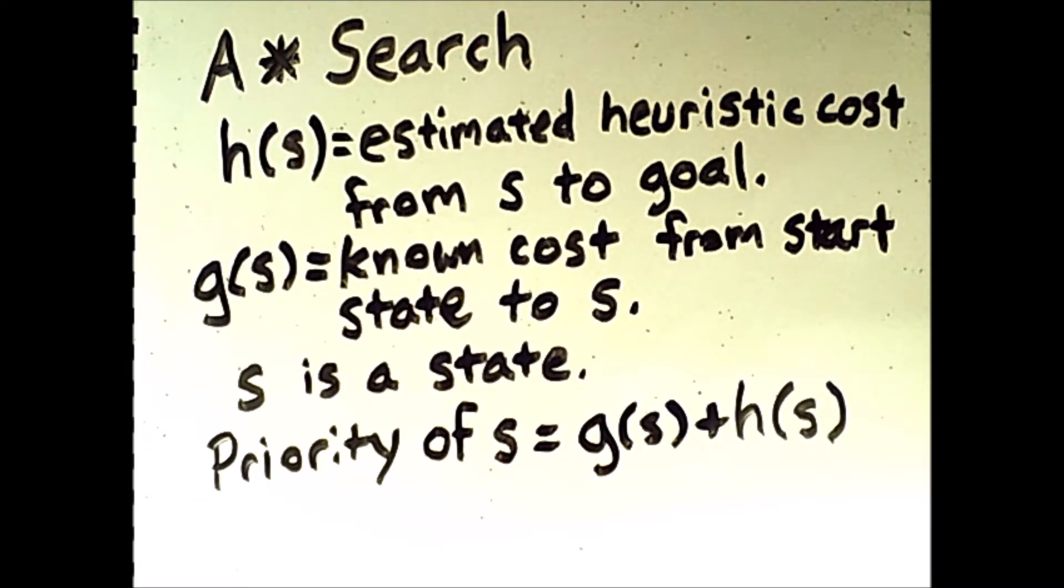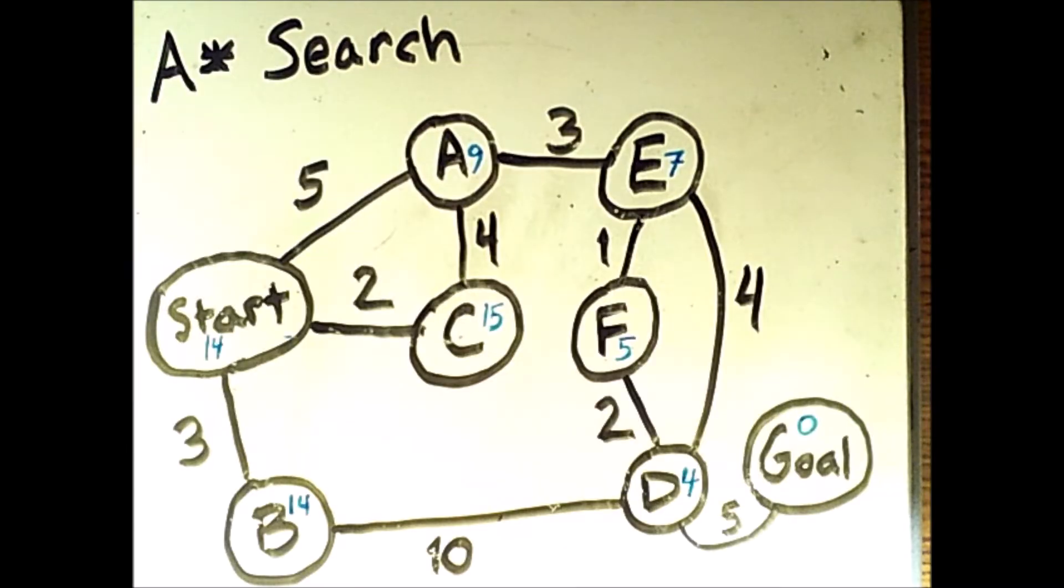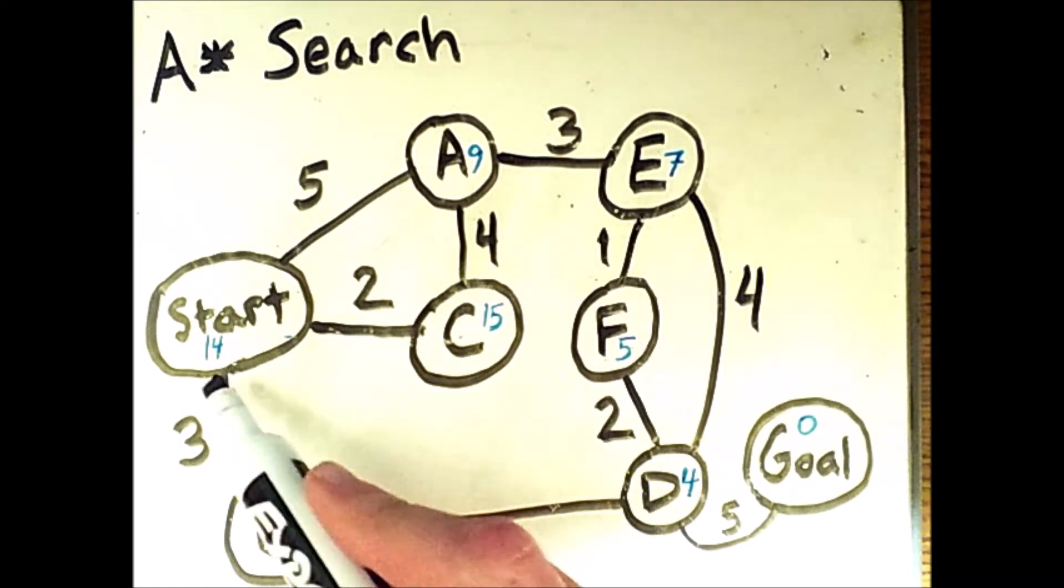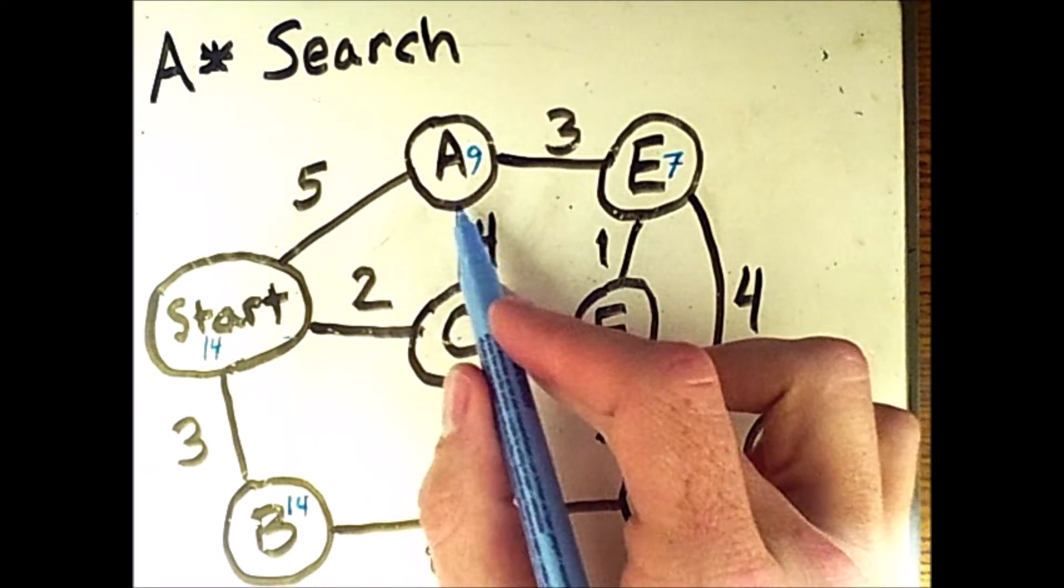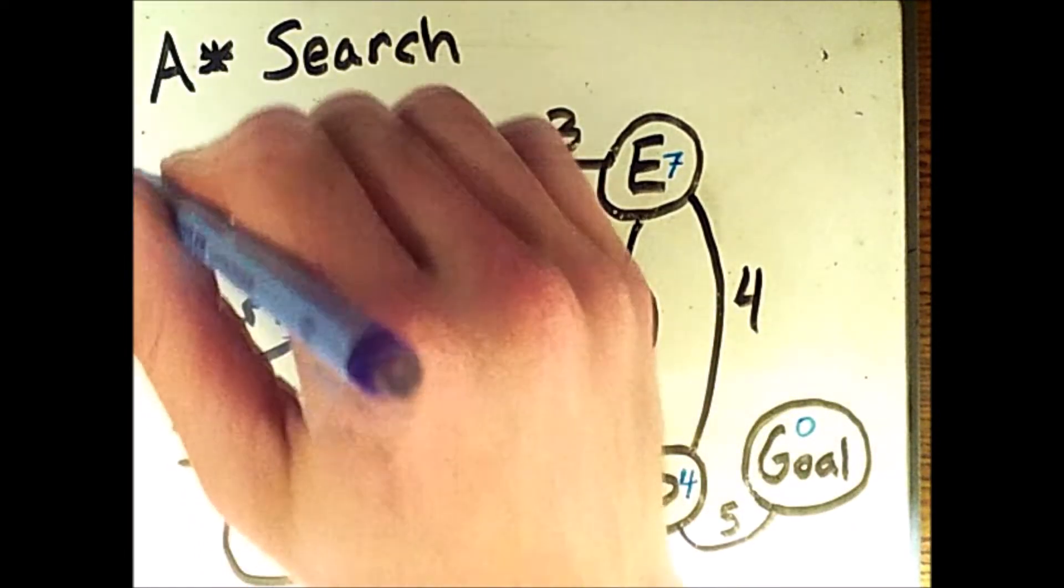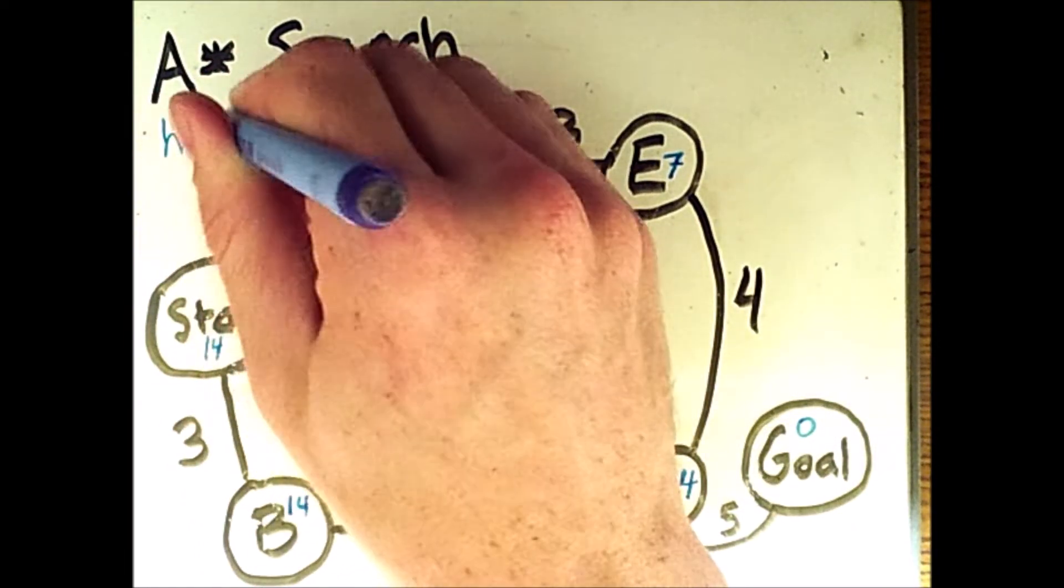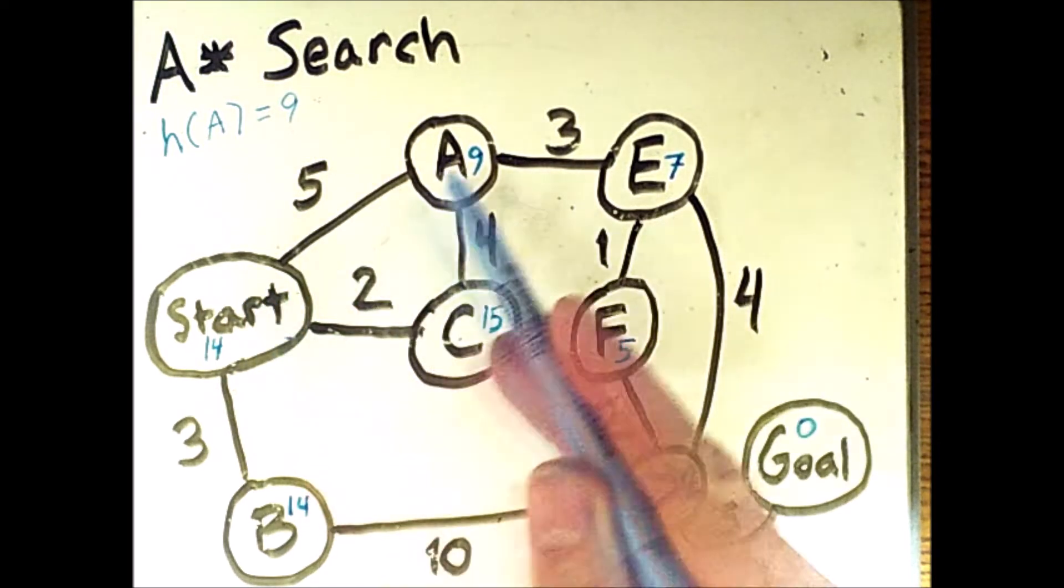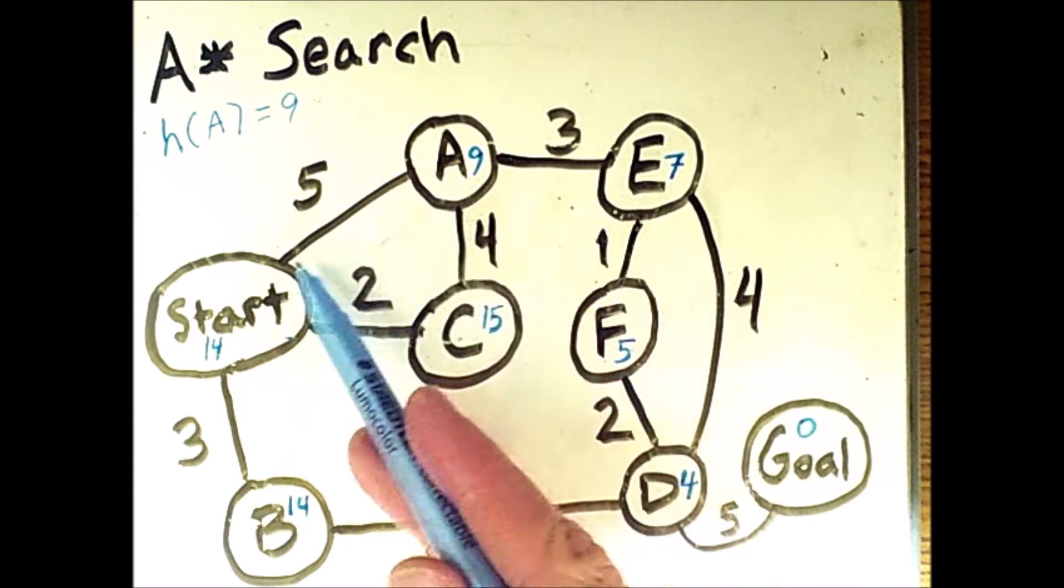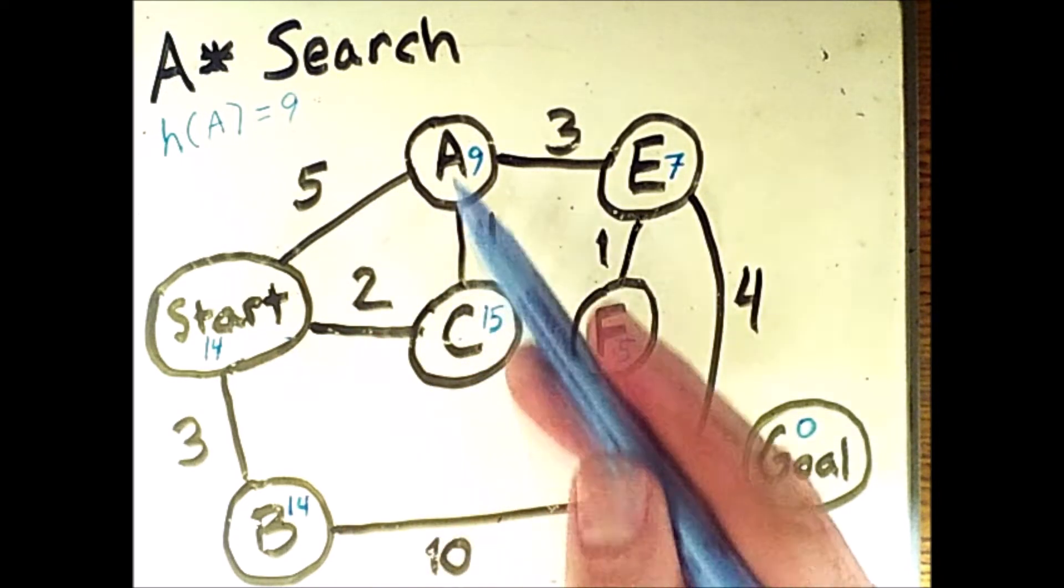Let's see how this works in the search problem from the previous video. So in order to apply A star search to the same problem from the previous video, I've added these blue numbers into each node. Those are the heuristic estimates. So in other words, the heuristic value of state A is 9, which means that h of A equals 9. Now the question of what g of A equals depends on how we reach A. If we go through this route, then the actual shortest cost to A is 5. And if we went this way, we would get a value of 6.